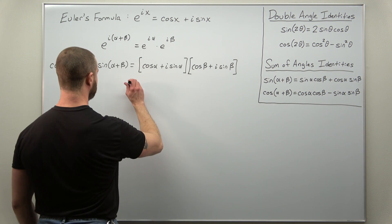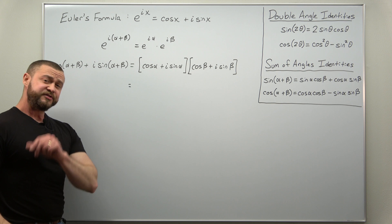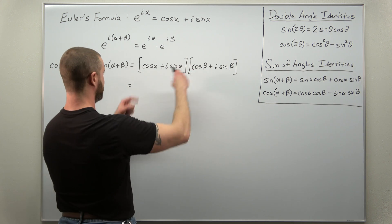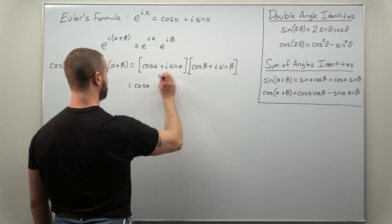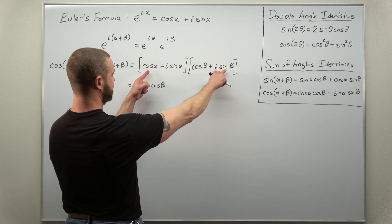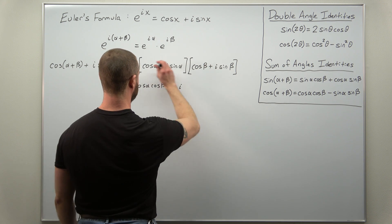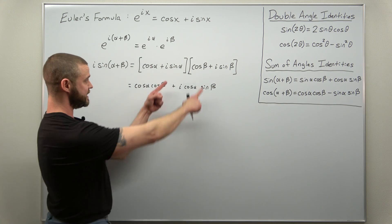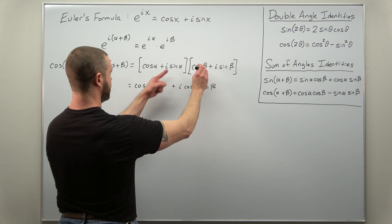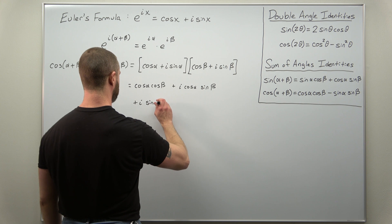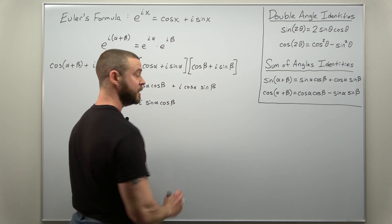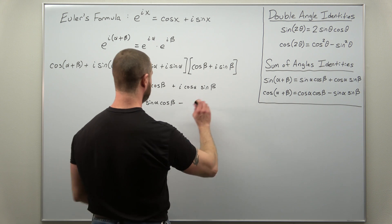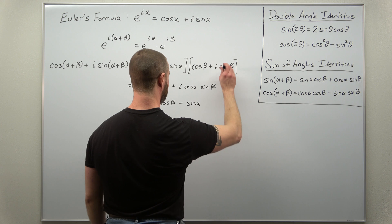We need to expand that right-hand side, being careful since the angles are not the same in each set of parentheses — we have α in one and β in the other. Expanding: first terms give cosα cosβ; outers give i cosα sinβ; inners give i sinα cosβ; and the last terms give i squared, which is negative one, times sinα sinβ.